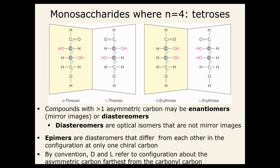When we go to a slightly more complicated monosaccharide where n equals four carbons — the tetroses — things get more complicated because they have more than one chiral carbon. For example, a tetrose has two chiral centers, highlighted here. Remember, chirality means four different groups around that carbon.